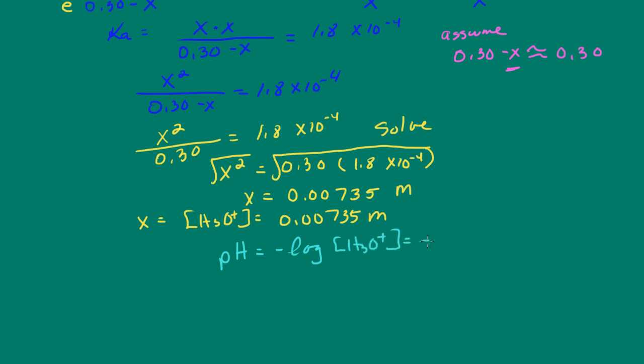So that's going to be the negative log of 0.00735. And our pH then, in this case, is going to be 2.14.